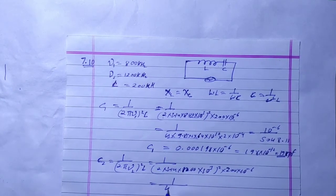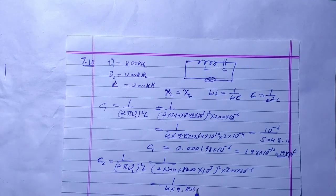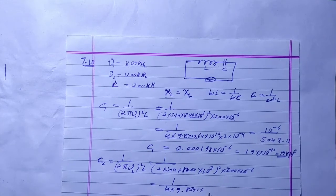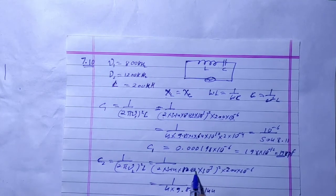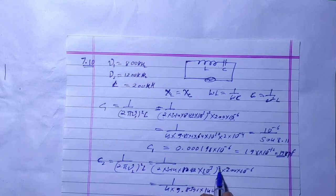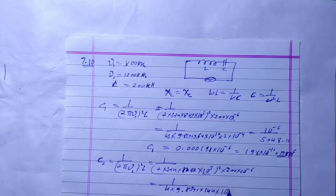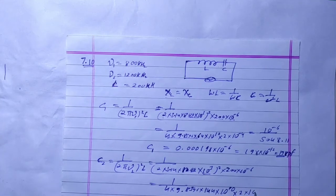We multiply, so we have 4 square, and 3.14 square is 9.8596, then 12 square is 144, and 10 power 3, 10 power 5, 10 power 5 gives 10 power minus 4, 10 power minus 6.